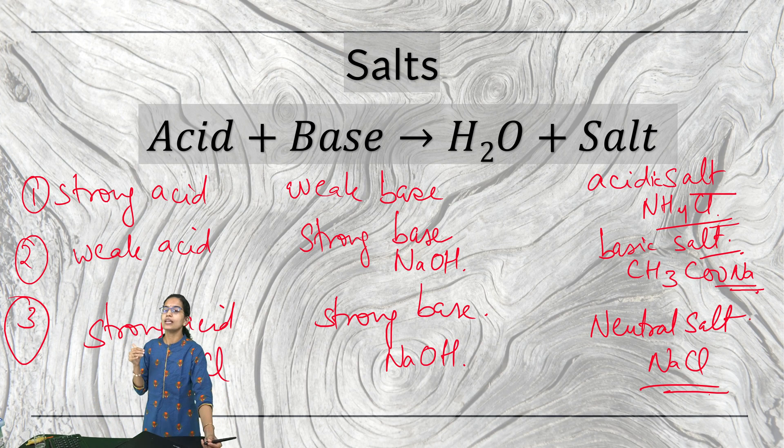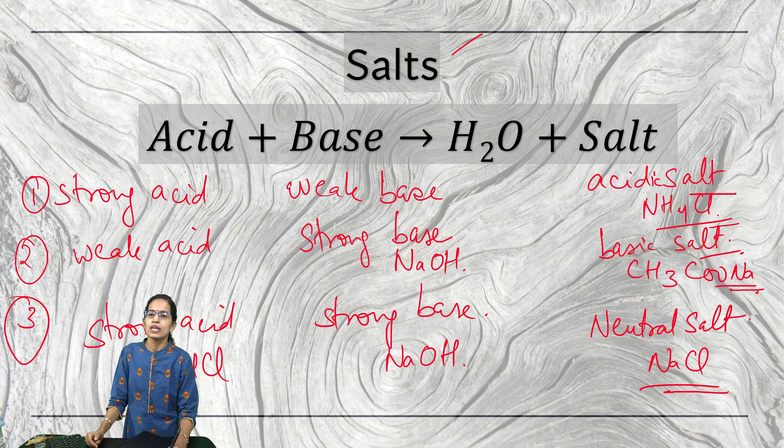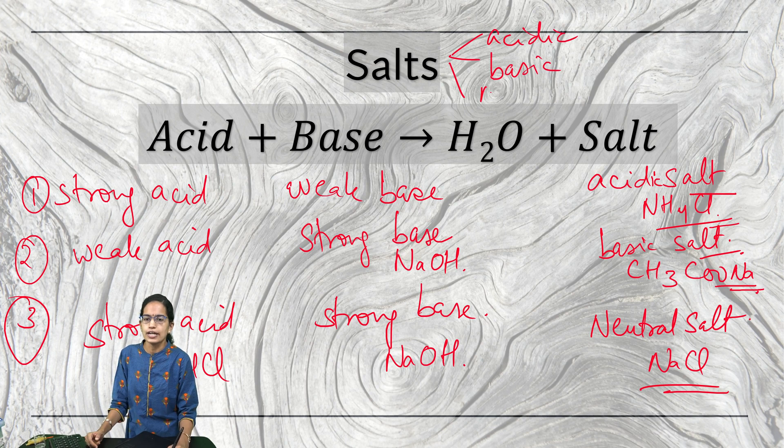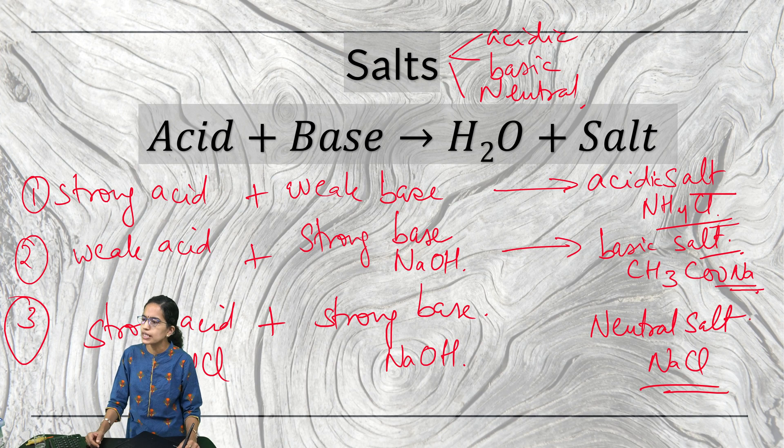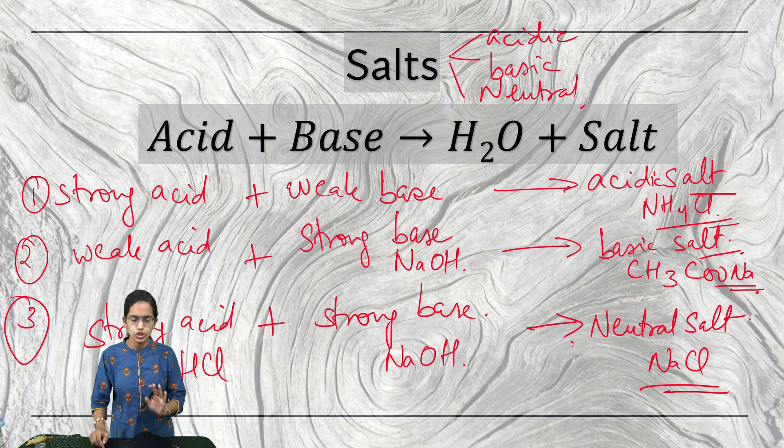Salts can be three types: acidic salts, basic salts, and neutral salts. And how these are formed? The reactions we have understood. Strong acid when reacts with weak base would give you acidic salt. Weak acid and strong base would give you basic salt. And strong acid and strong base would give you a neutral salt.